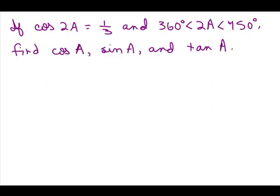Here's a trig problem we're going to solve. If the cosine of 2a equals 1/3 and 360 degrees is less than 2a which is less than 450 degrees — this is saying something about what quadrant 2a is in — find the cosine of a, the sine of a, and the tangent of a.